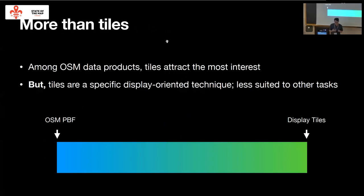But actually tiles are really interesting and applicable for web mapping, and they attract a lot of attention among the OpenStreetMap community. But tiles are actually a very specific, not that flexible solution. They're optimized for display and interactivity. But once you have these tiles created, you can't really do a lot else with them that's not just showing them on a map.